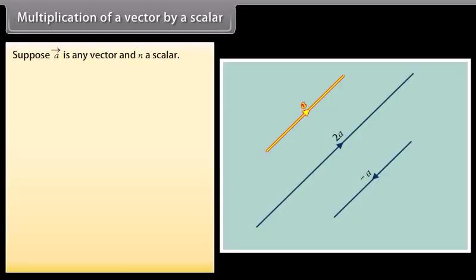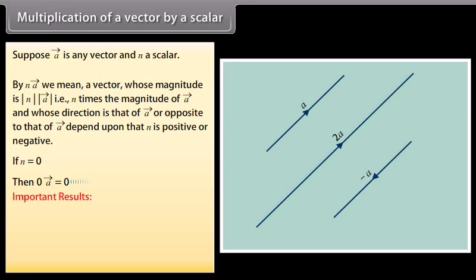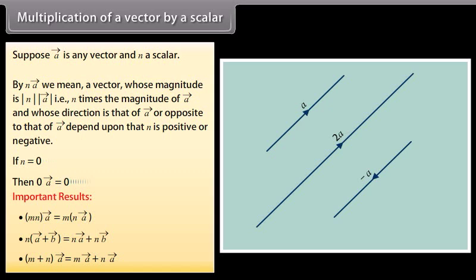Multiplication of a vector by a scalar. Suppose vector A is any vector and N a scalar. By vector NA we mean a vector whose magnitude is |N| times the magnitude of vector A, and whose direction is that of vector A or opposite to that of vector A, depending on whether N is positive or negative. If N equals 0, then 0 times vector A equals 0. Important results: MN vector A equals M(N vector A); N(vector A plus vector B) equals N vector A plus N vector B; (M plus N) vector A equals M vector A plus N vector A.